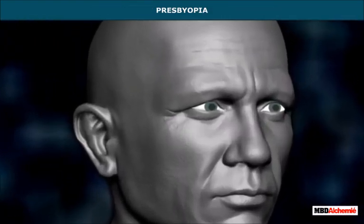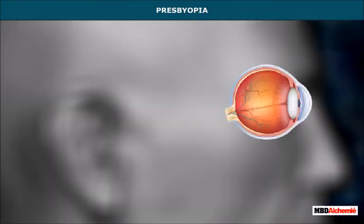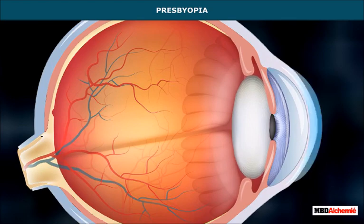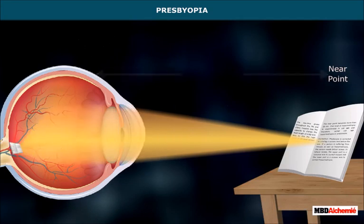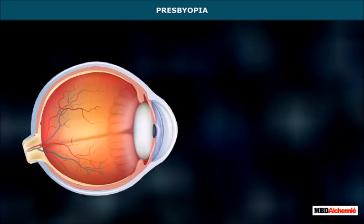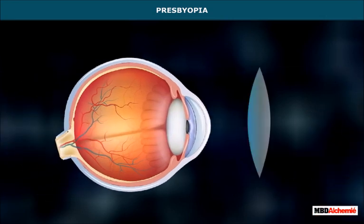In presbyopia, the lens grows throughout life and the ciliary muscles lose the capacity to change the focal length. Due to this, the near point of an elderly person recedes beyond 25 centimeters. This kind of hypermetropia is experienced in old age and is therefore called old-age hypermetropia or presbyopia. Presbyopia is corrected by placing a convex lens before the eye.